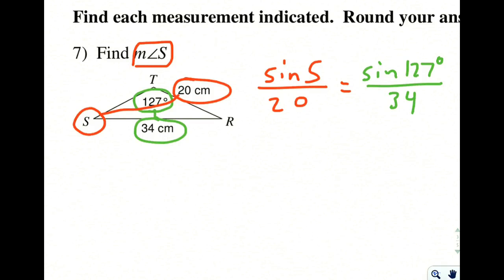divided by 34, the opposite side. So we can set up that ratio. And once we have that set up, we need to solve for S. We need to get S alone. And in order to do that, since it's in a sine, we need to get sine S alone.